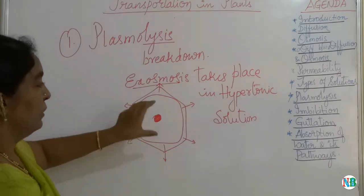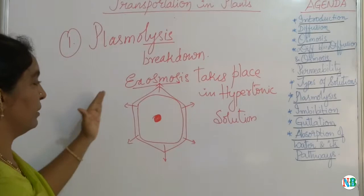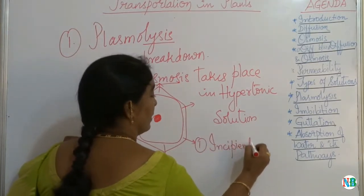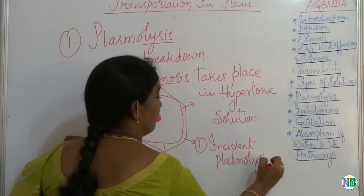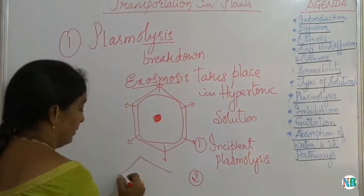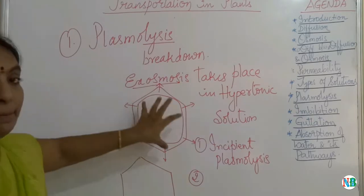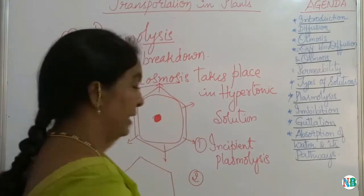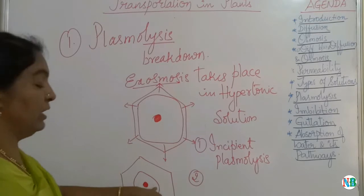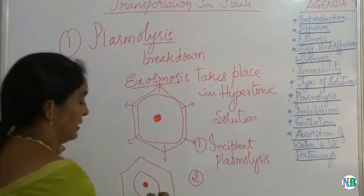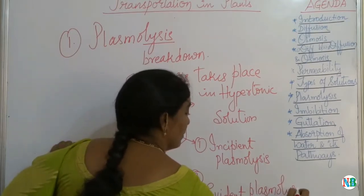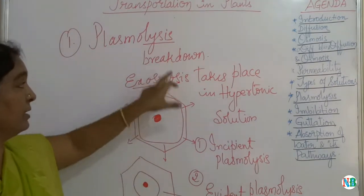The first stage is called incipient plasmolysis, where the protoplasm starts shrinking and moving away from the cell wall. In the second stage — evident plasmolysis — the protoplasm gets completely detached from the cell wall and you can see the protoplasm in a circular shape inside the plant cell, having lost its shape and volume. Exosmosis causes shrinkage of the protoplasm. If the plant cell is kept back in an isotonic or hypotonic solution, plasmolysis can be reversed. However, if plasmolysis continues for a longer time in hypertonic solution, it results in permanent damage.